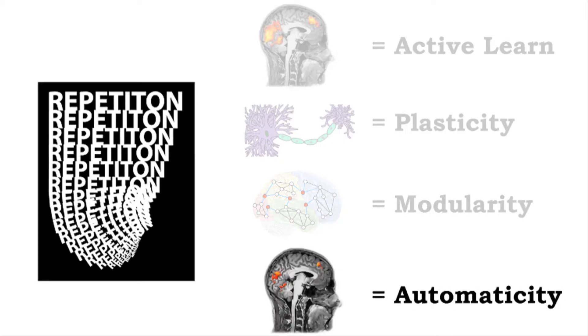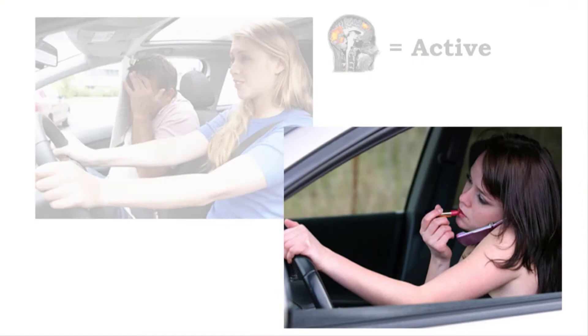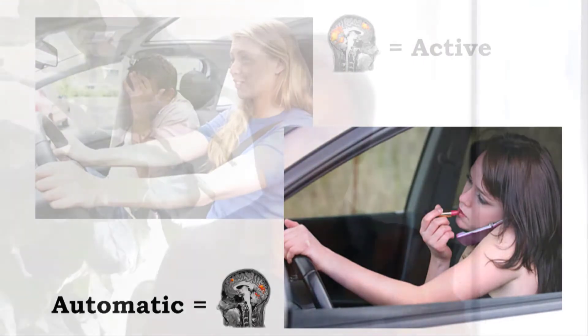Finally, as we keep repeating, the brain moves into automaticity — it can perform that skill with little effort or conscious thought. A simple example of this in action is driving. When you first learned how to drive, your brain was in high active learning mode. But as you practiced more and more, your brain started to change, it built a module, and now when you drive it's pure automaticity — you don't even have to consciously think about it.